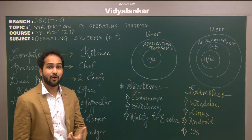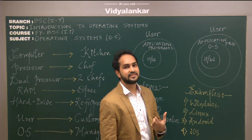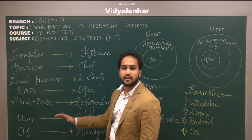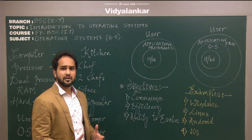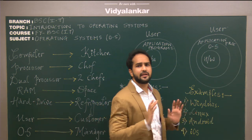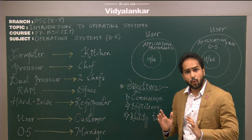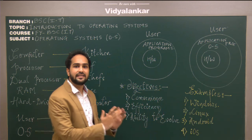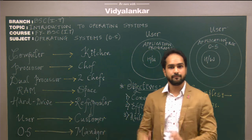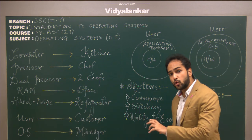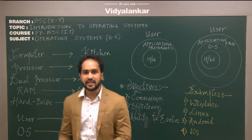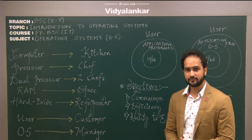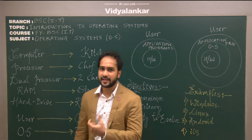I hope by now you must have understood what is an operating system with these two good examples. In the first example, we saw that whenever we go to the restaurant, we are very comfortable — we order whatever we want to the manager and all our job is done efficiently. The customer need not worry about anything because the manager is doing all the tasks. So let us define operating system once again.